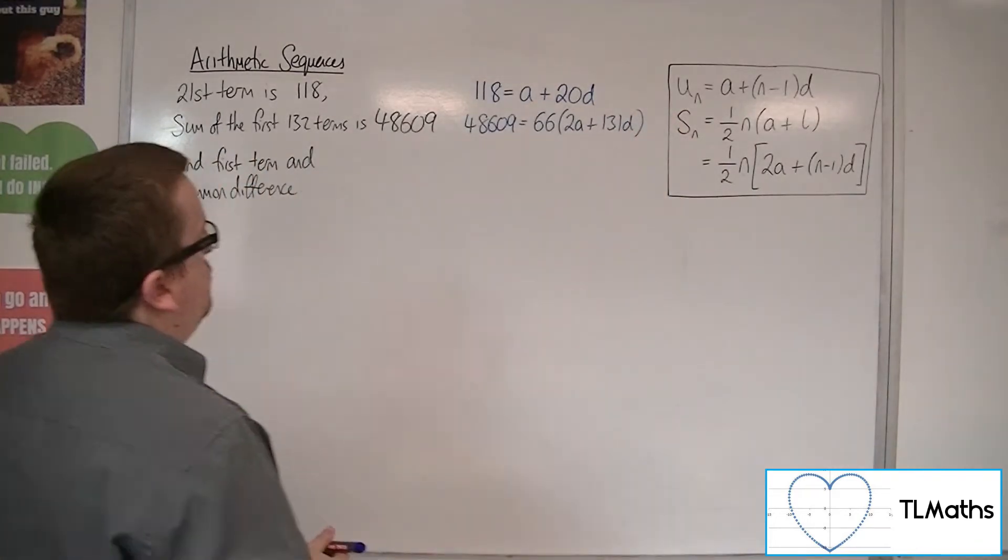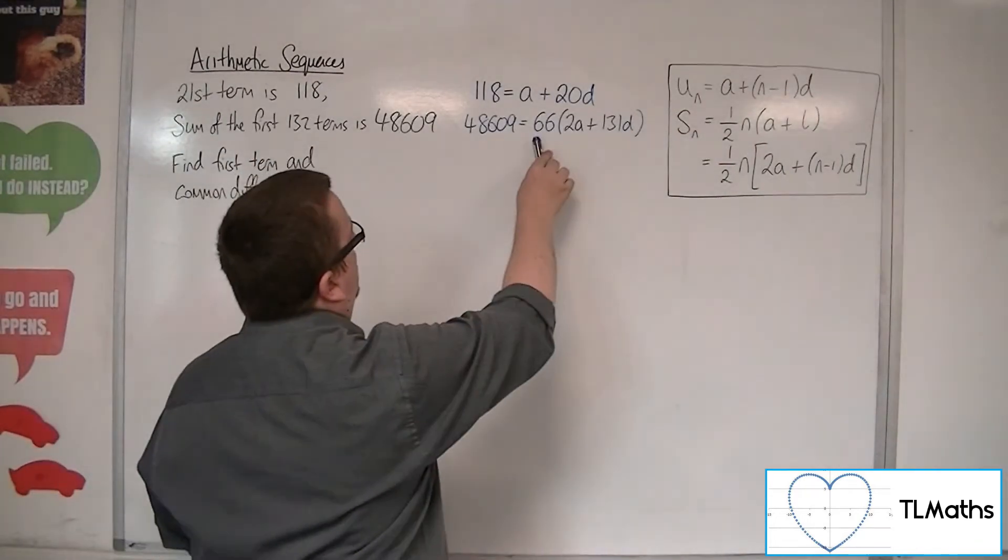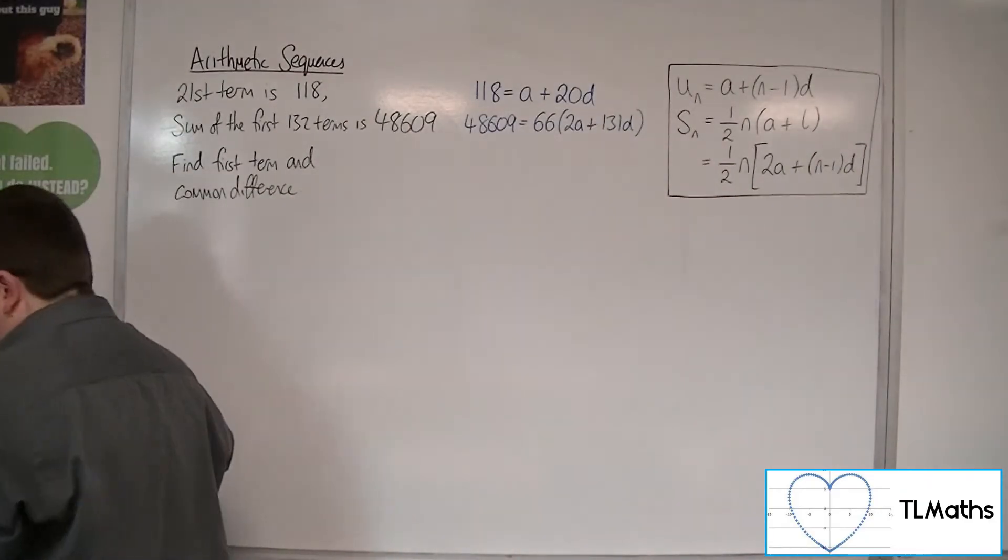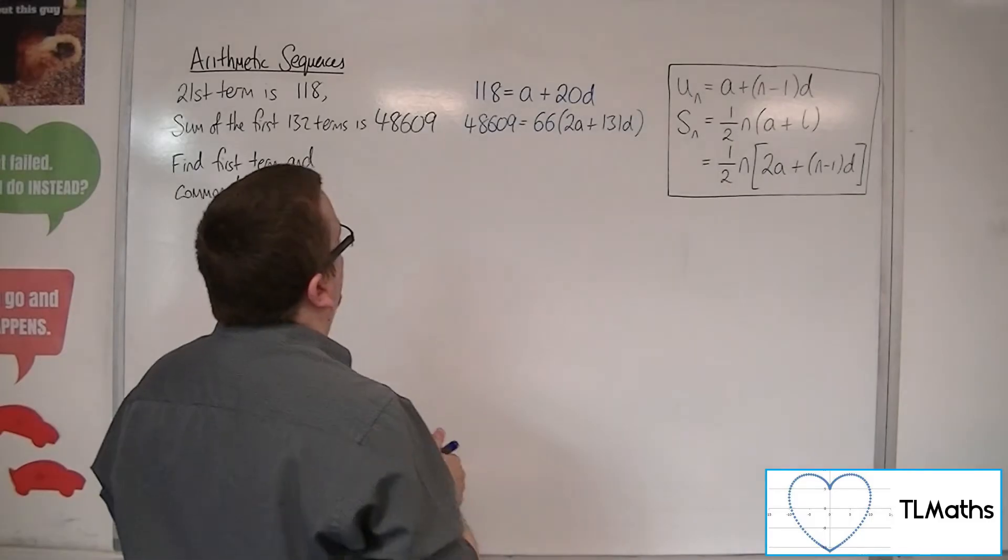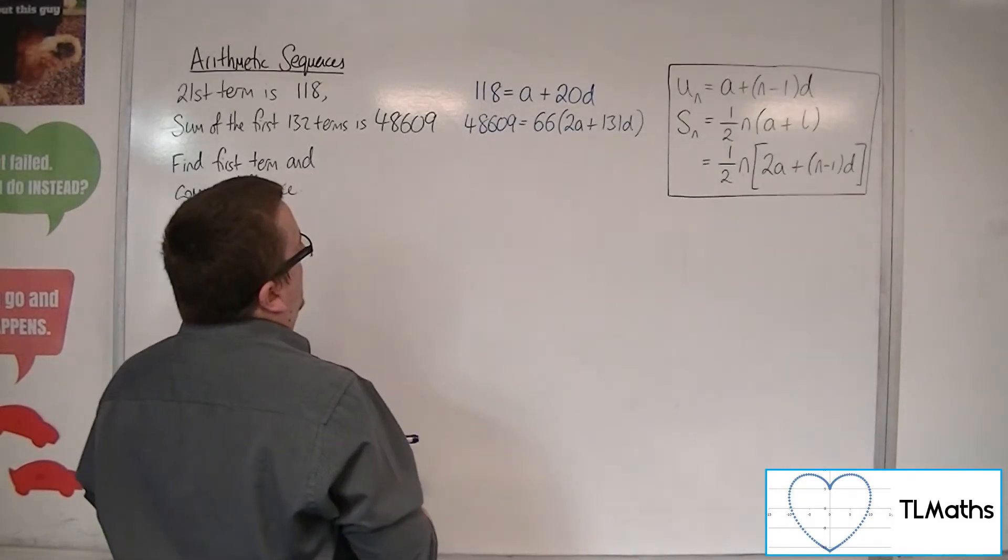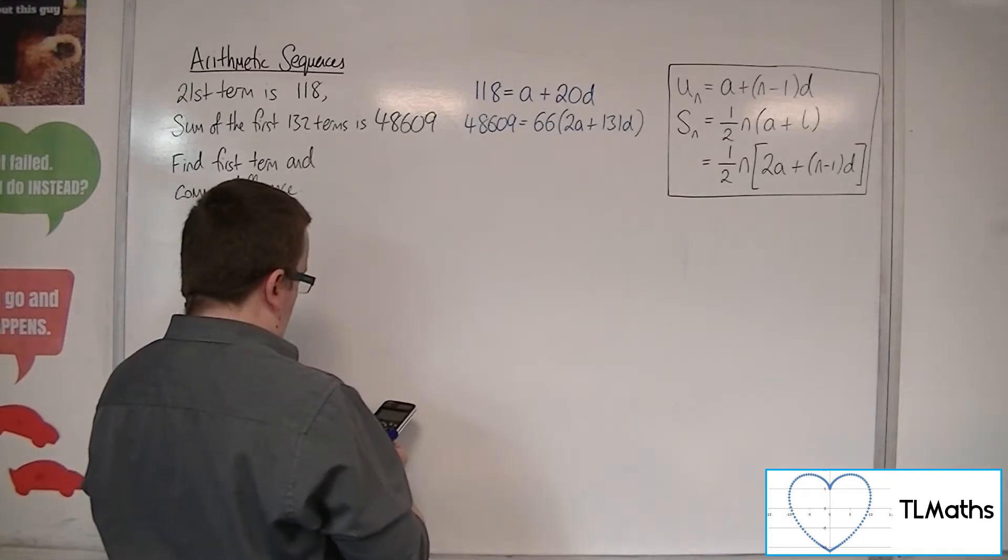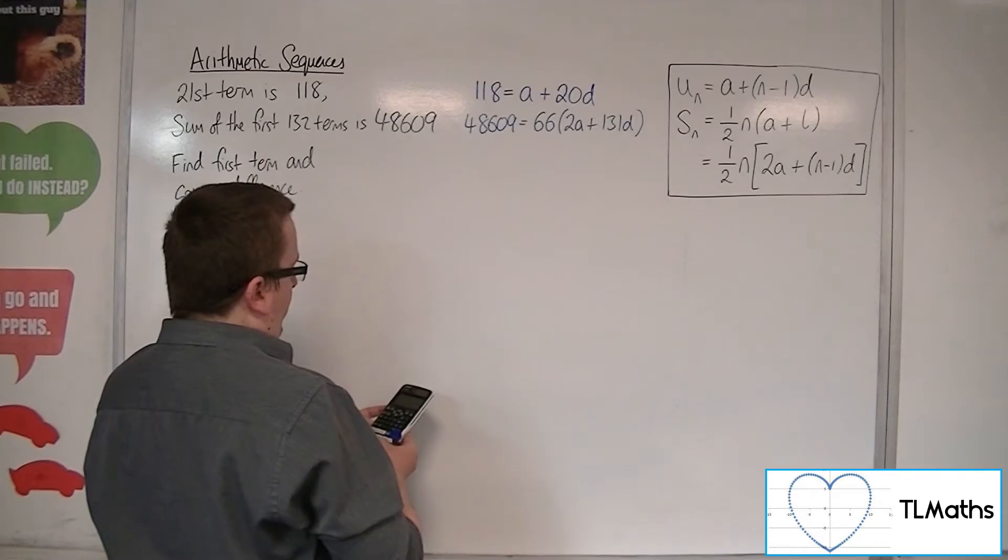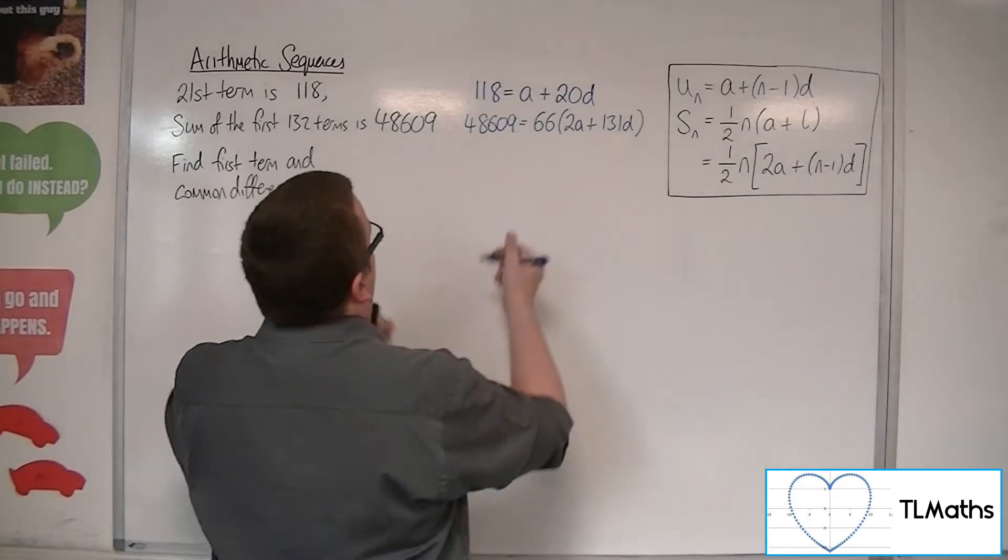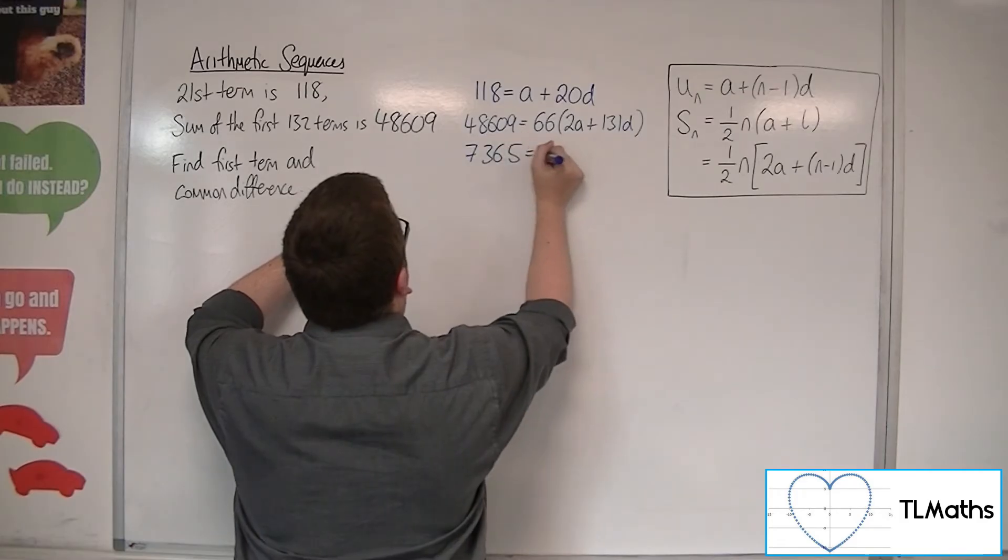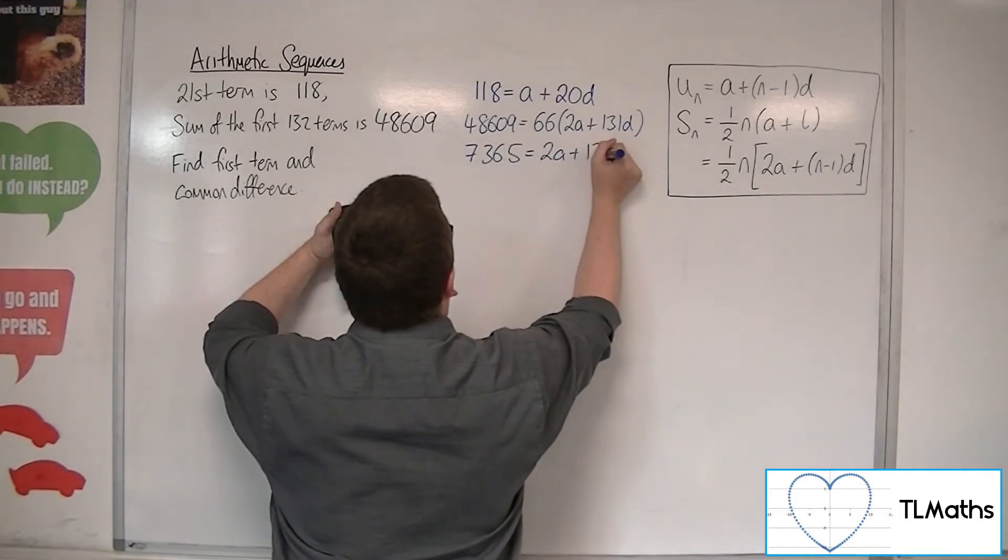Now, we probably want to simplify this. Multiplying through by that 66, well, maybe that might be a good idea. If I divide both sides by the 66, that might be better. So 736.5 is equal to 2A plus 131D.